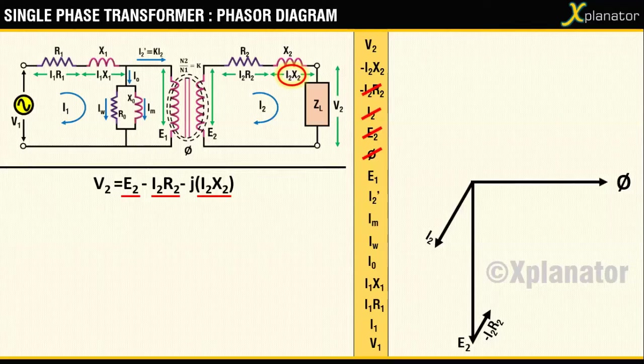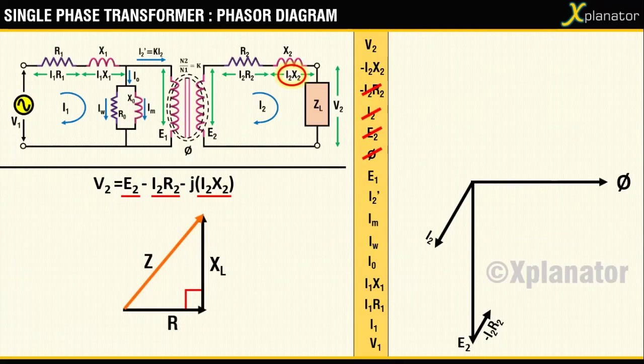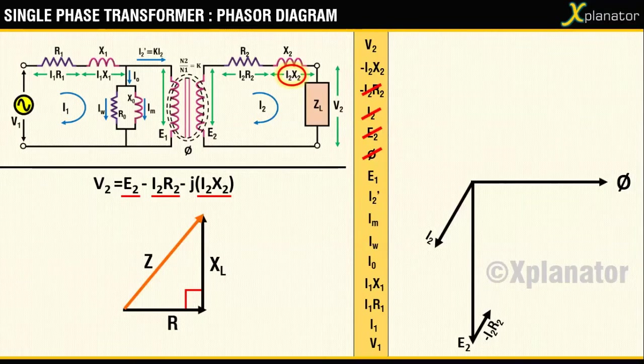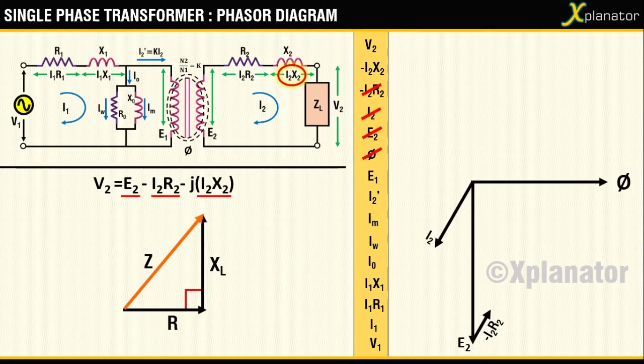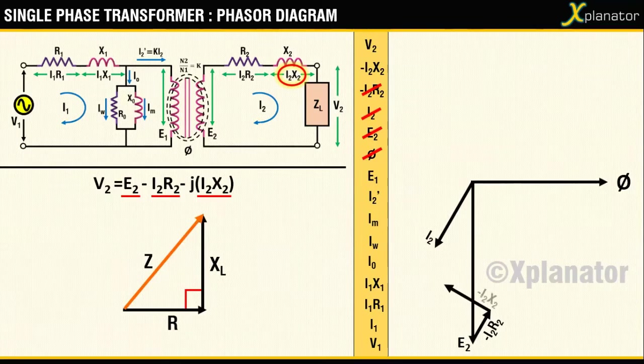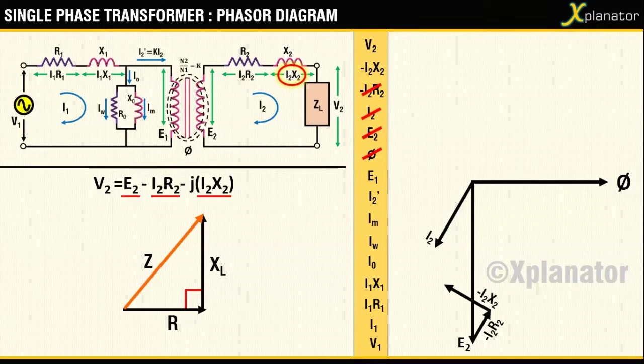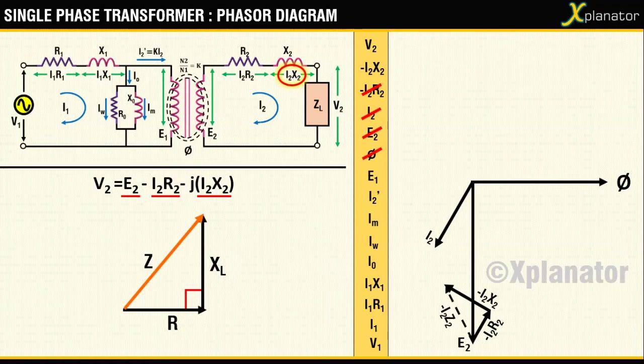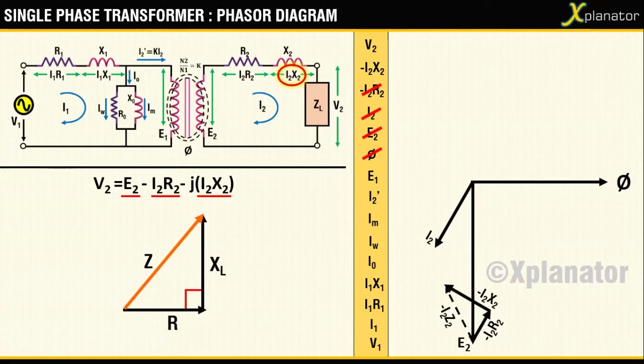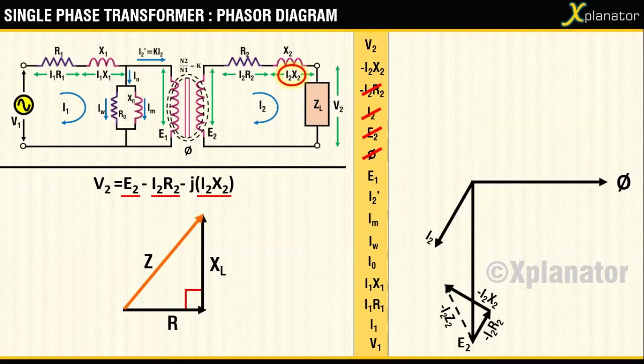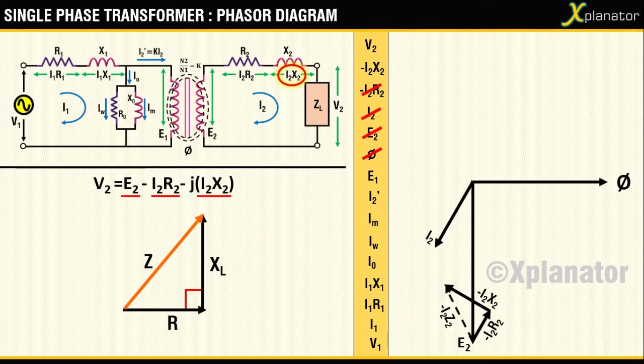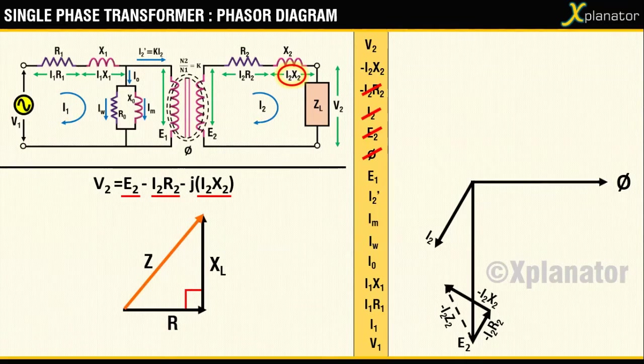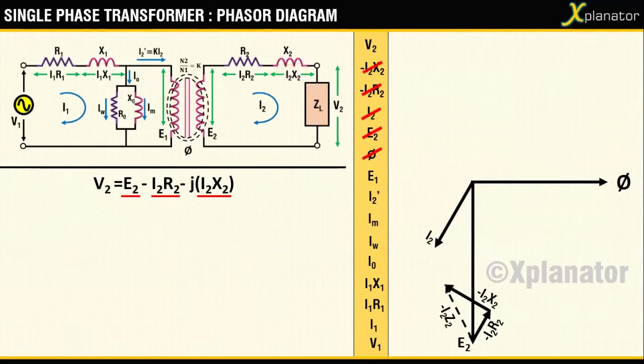The last term in the equation for V2 is minus I2X2. To draw this, take help of the impedance triangle. According to this, in an inductive circuit, X leads R. You therefore draw minus I2X2 90 degrees leading the vector minus I2R2. Since the direction of current has already been reversed, you need not worry about the minus in minus I2X2 again. With this, all the parameters in the equation for V2 have been drawn.